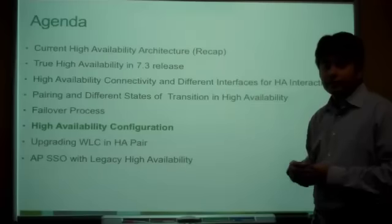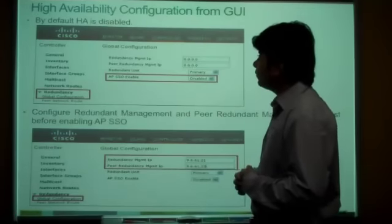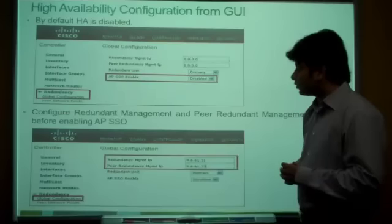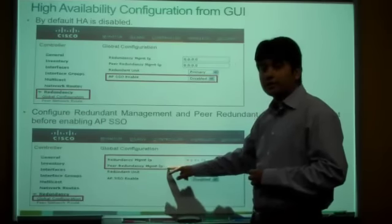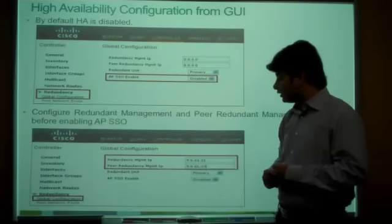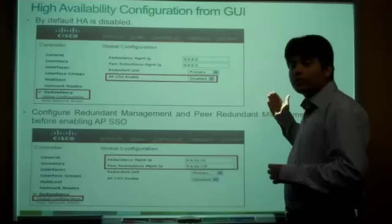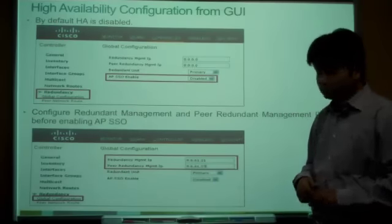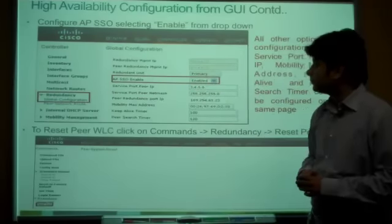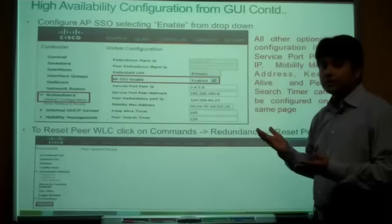Now let's see how to configure the new APSSO feature from the GUI. By default it is disabled, and configuring APSSO is just 3 steps. First, configure the redundancy management IP and the peer redundancy management IP. The redundancy management IP is a parallel interface to management — configure the IP belonging to this controller, then configure the peer IP belonging to the standby. The same must be done in reverse on the other controller. Next, define who is primary and who is secondary controller. Then simply enable APSSO.